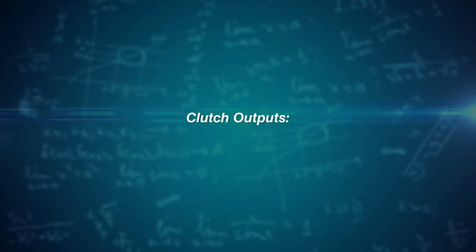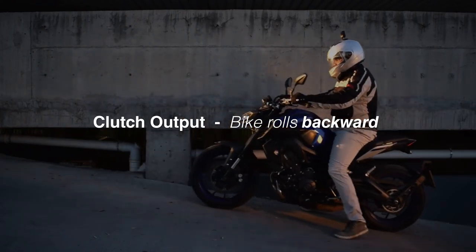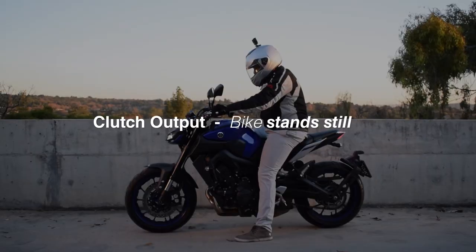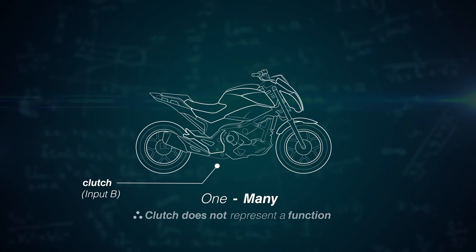The outputs would respectively be the bike rolling forward, backwards, or just standing still. There are therefore many outputs related to our single input. This is a one-to-many relation which therefore does not represent a function.